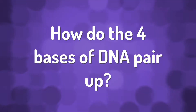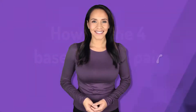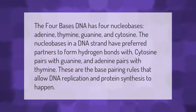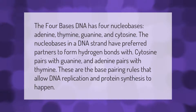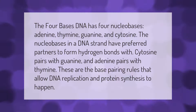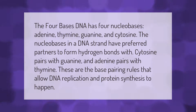DNA has four nucleobases: adenine, thymine, guanine, and cytosine. The nucleobases in a DNA strand have preferred partners to form hydrogen bonds with — cytosine pairs with guanine and adenine pairs with thymine. These are the base pairing rules that allow DNA replication and protein synthesis to happen.